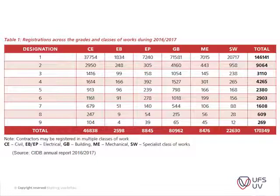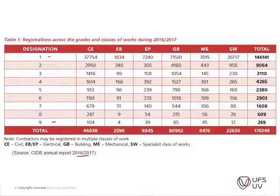I've taken this from the construction industry report of 2017 — I think that was the latest one published. I wanted to highlight some items here. If you are a registered CIDB graded contractor, these are more or less the categories. Category 1 businesses have a smaller turnover, up to designation 9 where contractors have a large turnover and can do projects over 200 million rand.